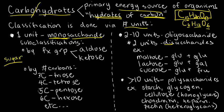A monosaccharide can be further described in two ways: by its functional group, and by its number of carbons. You have two options for the functional group — aldehyde group or ketone group. Both, if you recall your organic chemistry, are carbonyl-containing. We use the suffix -ose for monosaccharides. That's where popular words like glucose, fructose, and galactose come from.